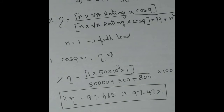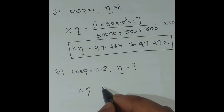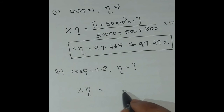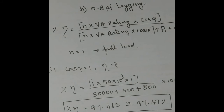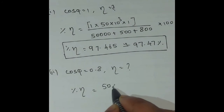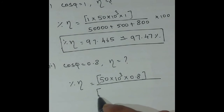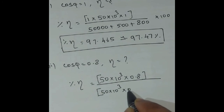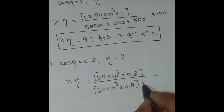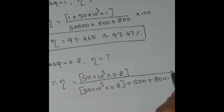For Case 2, cos φ equals 0.8. The percentage efficiency formula is: n × VA rating × cos φ, divided by n × VA rating × cos φ plus losses. Substituting: 50,000 × 0.8, divided by 50,000 × 0.8 plus iron loss 500 watt plus full load copper loss 800 watt, multiplied by 100.